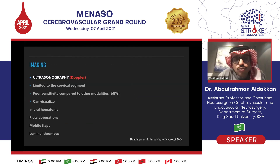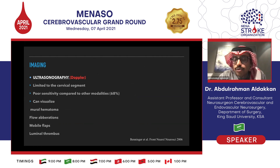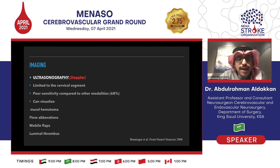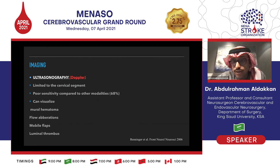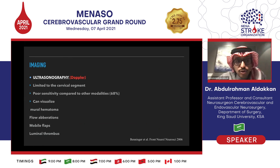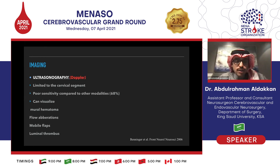In terms of imaging, we'll start with the basics. Ultrasonography is a well-known imaging modality, especially the Doppler mode, not the B mode. The downside is that it's limited to the cervical segment — it's very difficult to assess intracranial dissection using ultrasound. It has poor sensitivity compared to other imaging modalities, basically around 68% to 70%. We can visualize the mural hematoma and flow aberration to detect any flow changes across the area of the dissection.